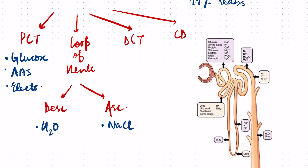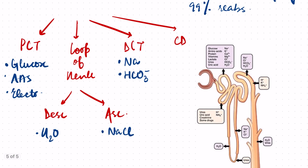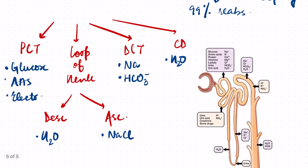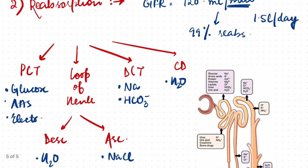In the DCT, some selective reabsorption of sodium occurs, and bicarbonates are also reabsorbed in the DCT. The DCT also secretes some ions — I will talk about them in the secretion part. And finally, in the collecting duct, the maximum amount of water is reabsorbed and the urine is concentrated. This is the function of reabsorption in different parts of the nephron.